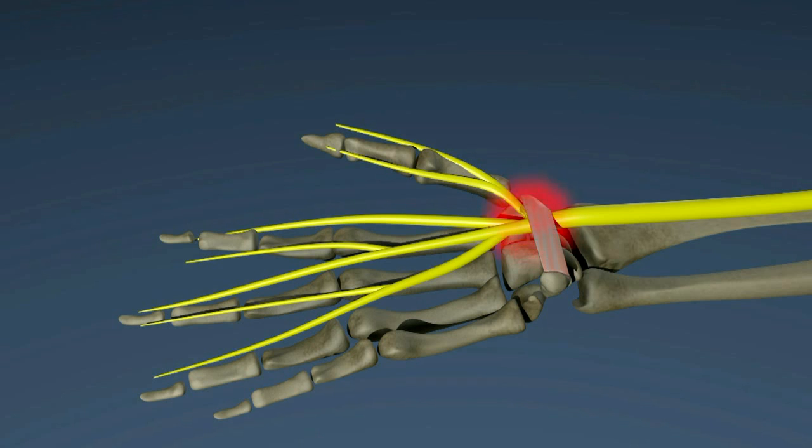The median nerve branches out to supply the thumb, index finger, middle finger, and half of the ring finger with sensation. Symptoms that occur in this pattern are suspicious for carpal tunnel syndrome.